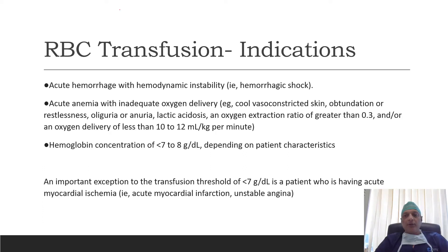The indications of RBC transfusion are mainly divided into three. First is acute hemorrhage with hemodynamic instability, essentially the presence of hemorrhagic shock. Second indication is acute anemia with inadequate oxygen delivery. Acute anemia is essentially the presence of acute hemorrhage, and inadequate oxygen delivery is manifested with cool skin, obtundation or restlessness, oliguria or anuria, and the presence of lactic acidosis. The third indication is hemoglobin concentration of less than 7 to 8 gram percent.